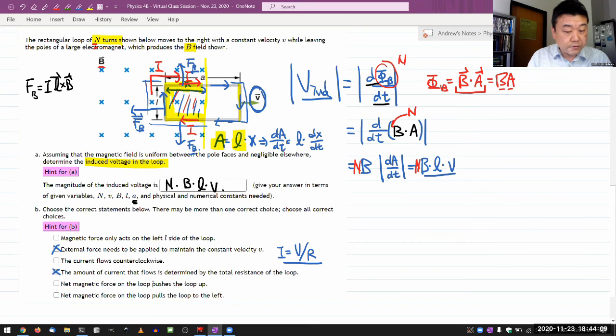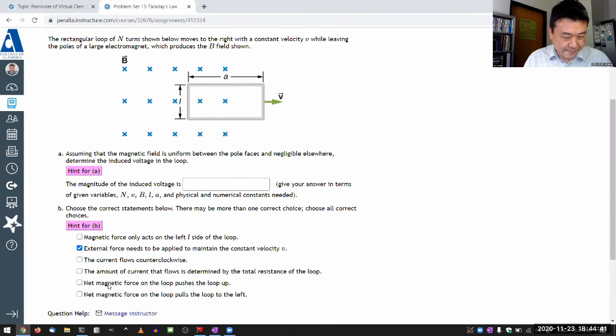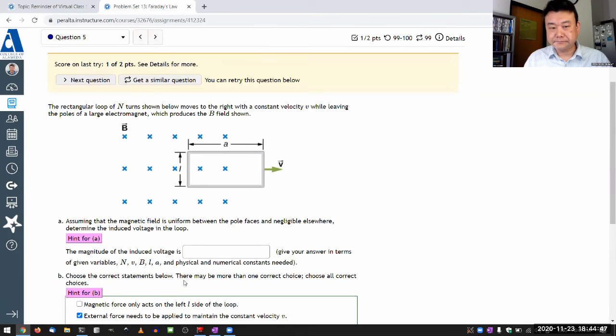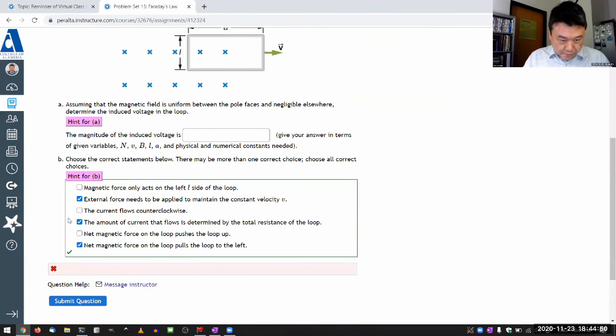Net magnetic force on the loop pushes the loop up. We just went through that. There is no net magnetic force in the vertical direction. There's a force on the segments that are up and down, but they balance out. So that's not correct. Net magnetic force on the loop pulls the loop to the left. Yeah, that's what I figured out here. So that should be correct.